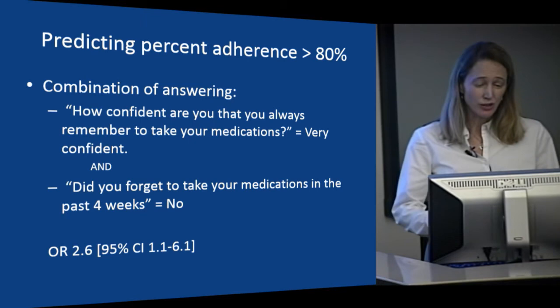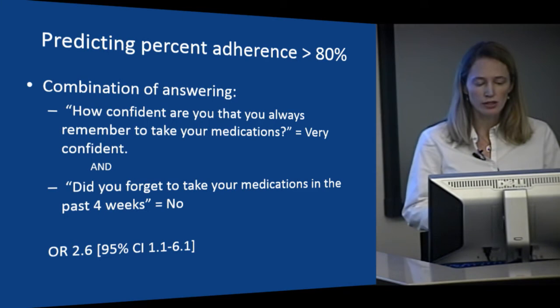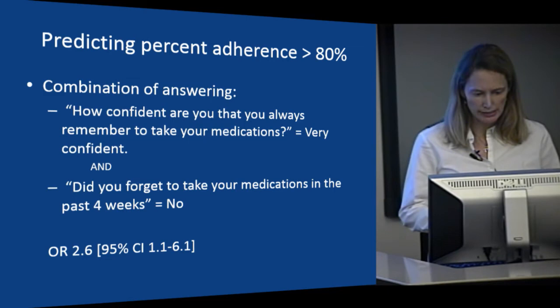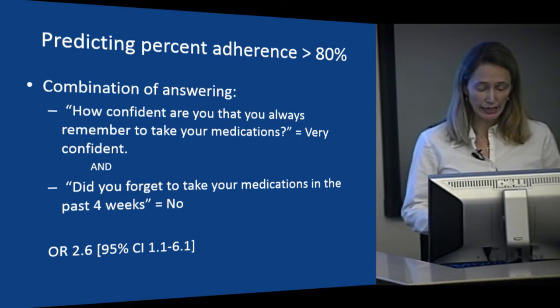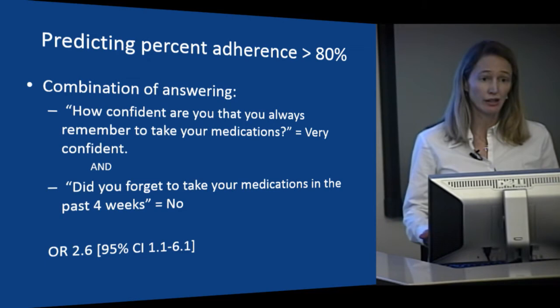I was also interested in developing screening items to identify who is poorly adherent. There was a combination of two questions that was particularly helpful: patients who responded that they were very confident they always remember to take their medications, and that they had not forgotten to take them in the past four weeks, were more likely to demonstrate at least 80% adherence with the electronic monitors, with an odds ratio of 2.6. In our ongoing pilot study, we're using these two questions to screen over the phone for poorly adherent patients before testing our intervention.